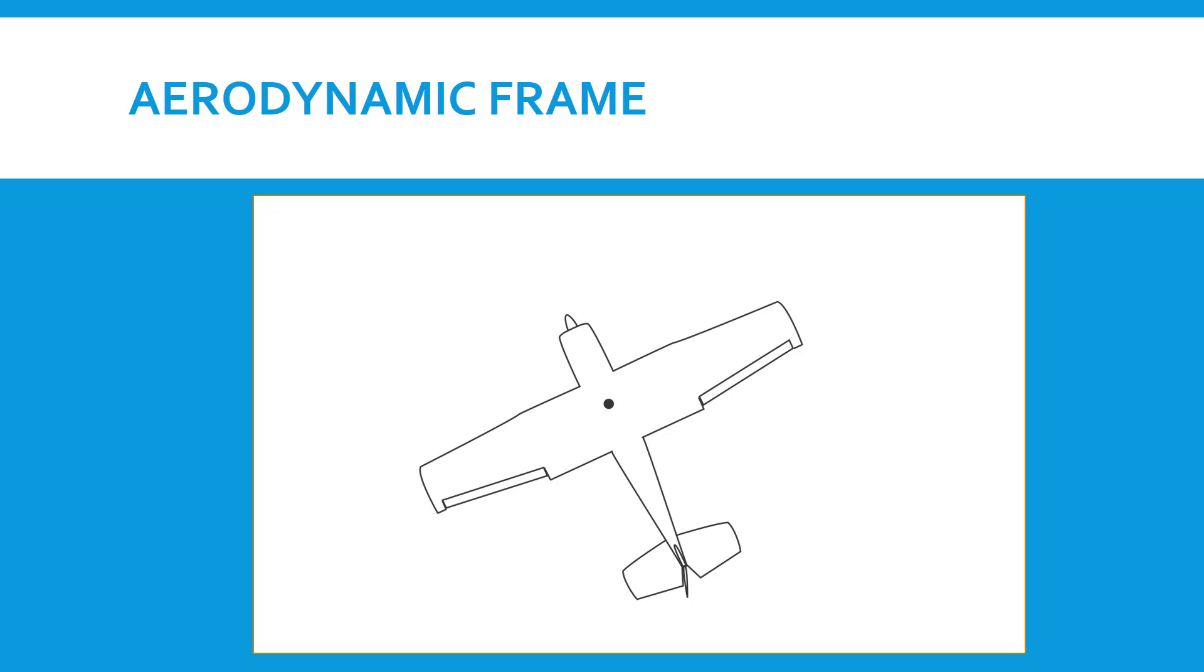The last coordinate system that I'll define is the aerodynamic frame, and it also is attached to the aircraft. Here we're going to use a flight maneuver called slipping to define this coordinate system and show the difference between it and the body-fixed frame.